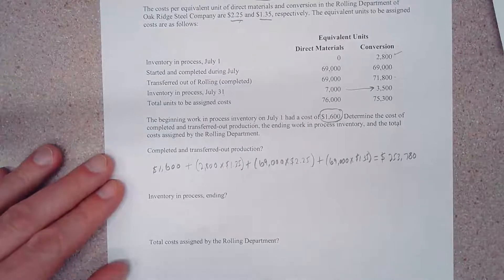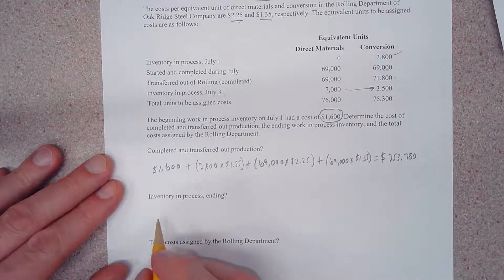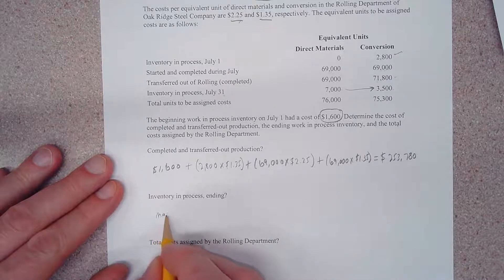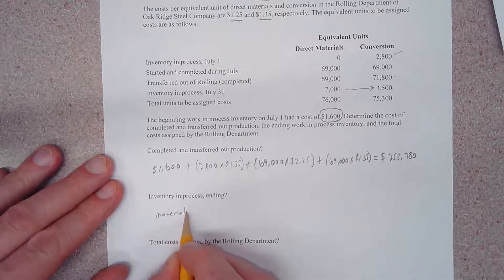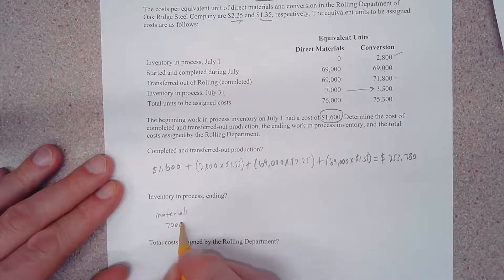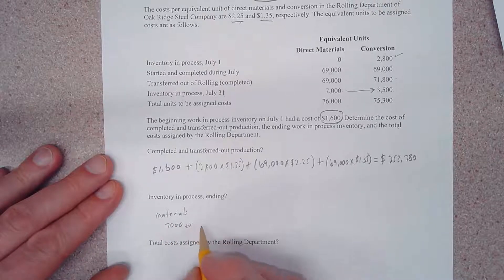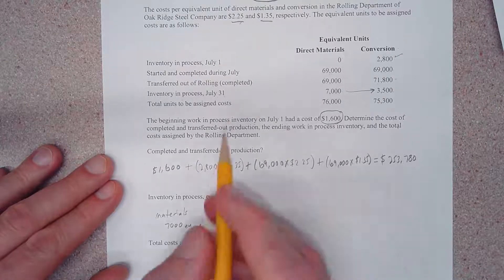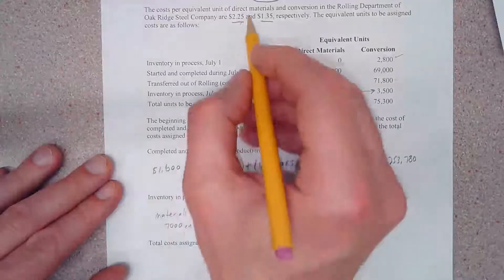Well, I'm going to tell you all we have to do is simply take our materials of 7,000 equivalent units times our given $2.25.